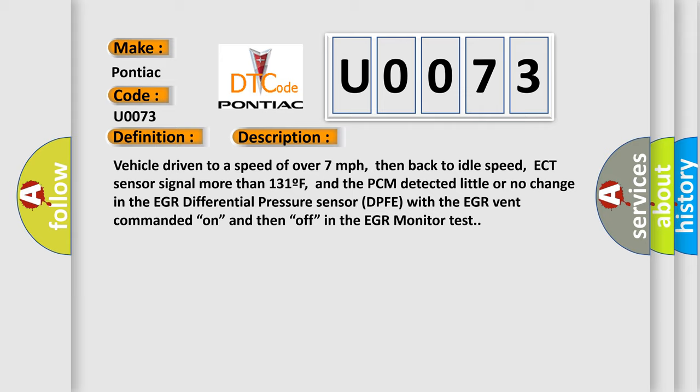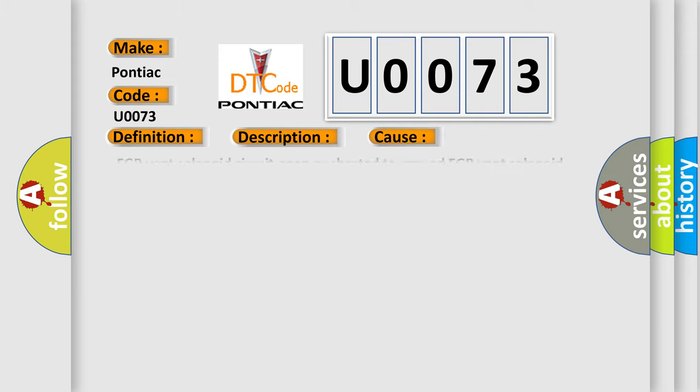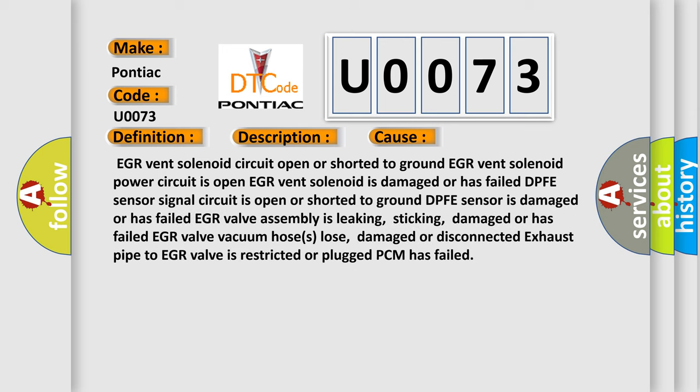This diagnostic error occurs most often in these cases: EGR vent solenoid circuit open or shorted to ground; EGR vent solenoid power circuit is open; EGR vent solenoid is damaged or has failed; DPFE sensor signal circuit is open or shorted to ground; DPFE sensor is damaged or has failed; EGR valve assembly is leaking, sticking, damaged or has failed; EGR valve vacuum hoses loose, damaged or disconnected; exhaust pipe to EGR valve is restricted or plugged; or PCM has failed.